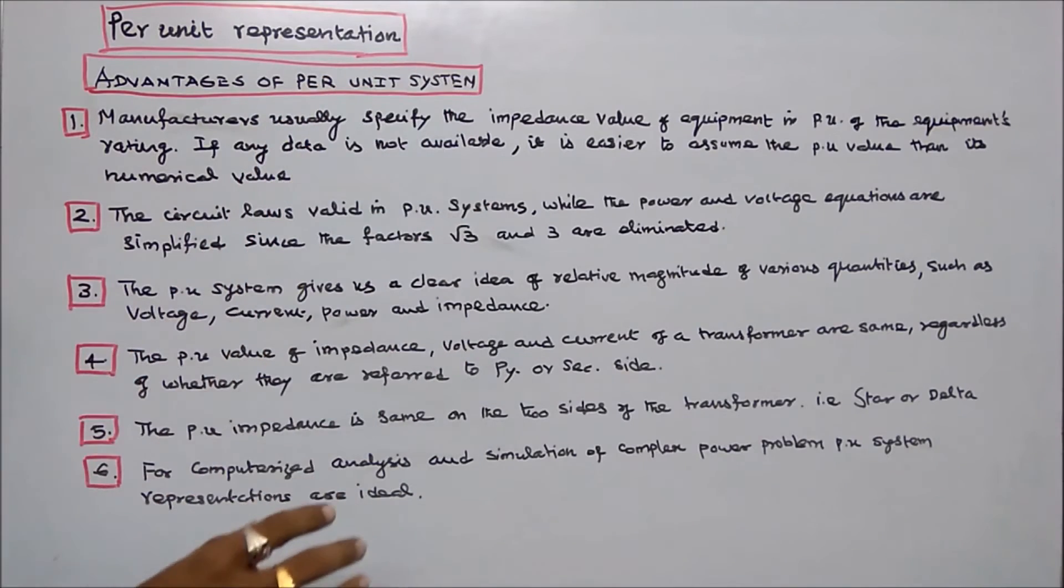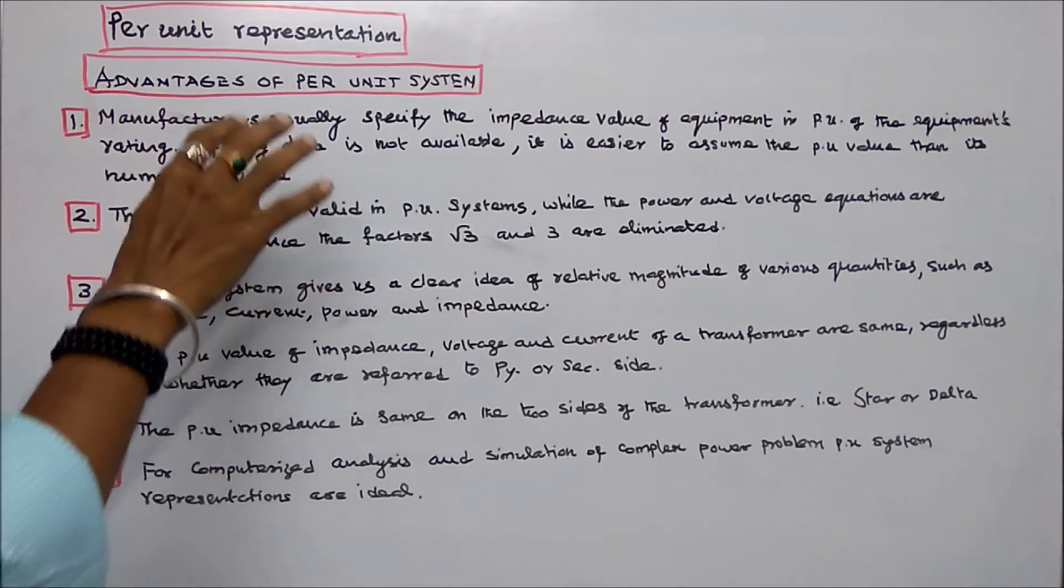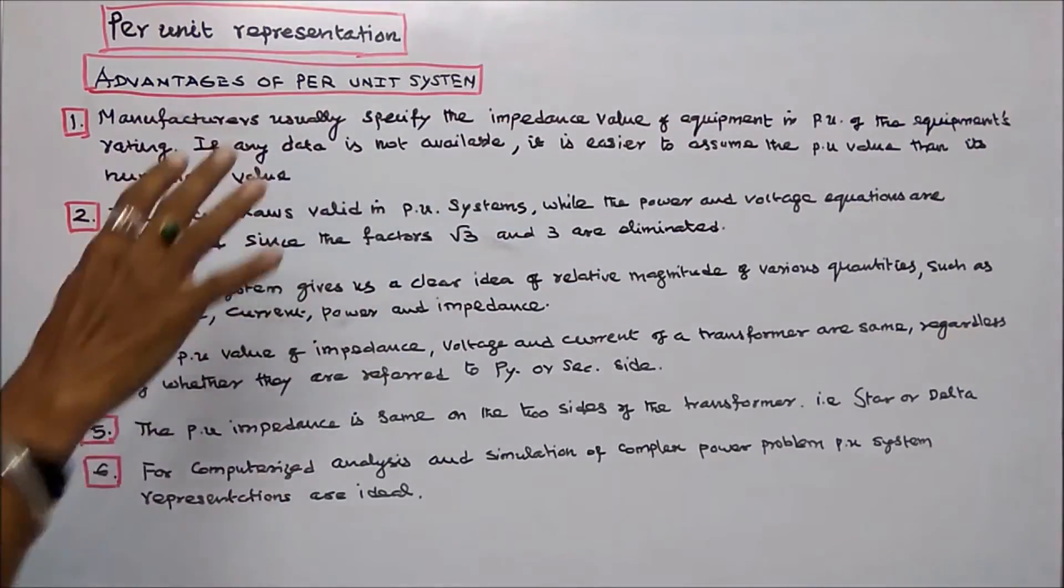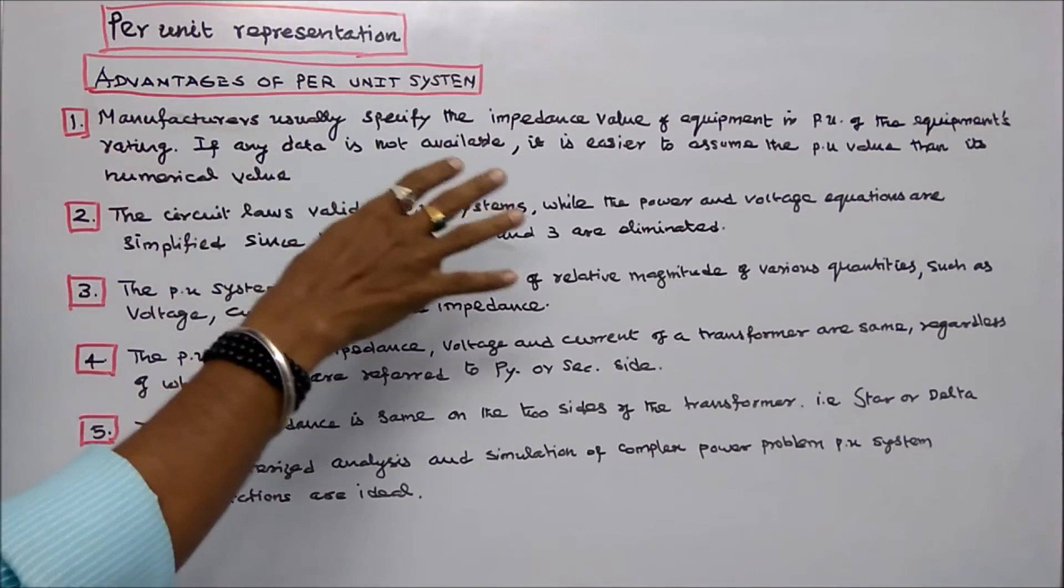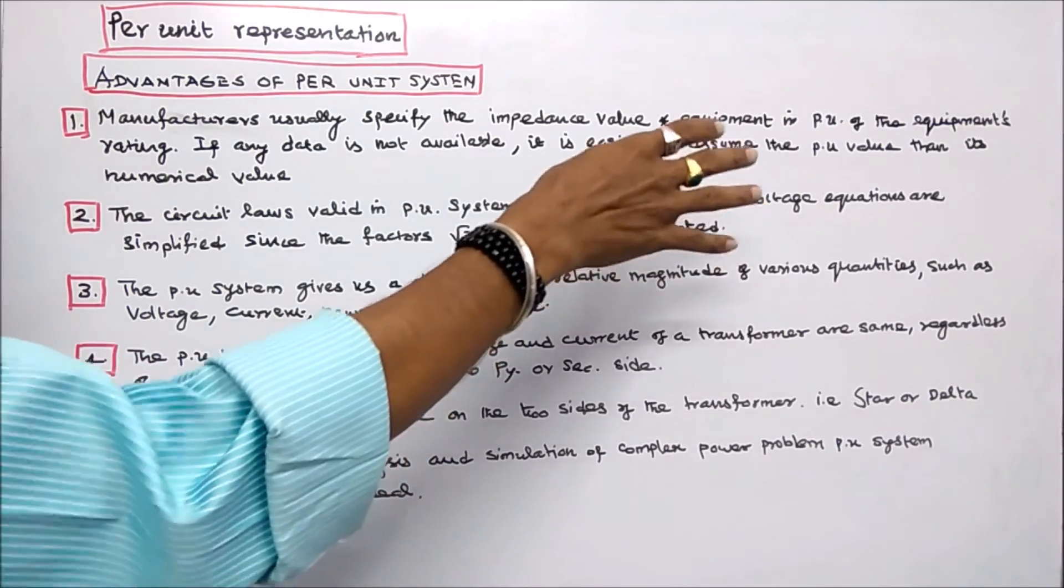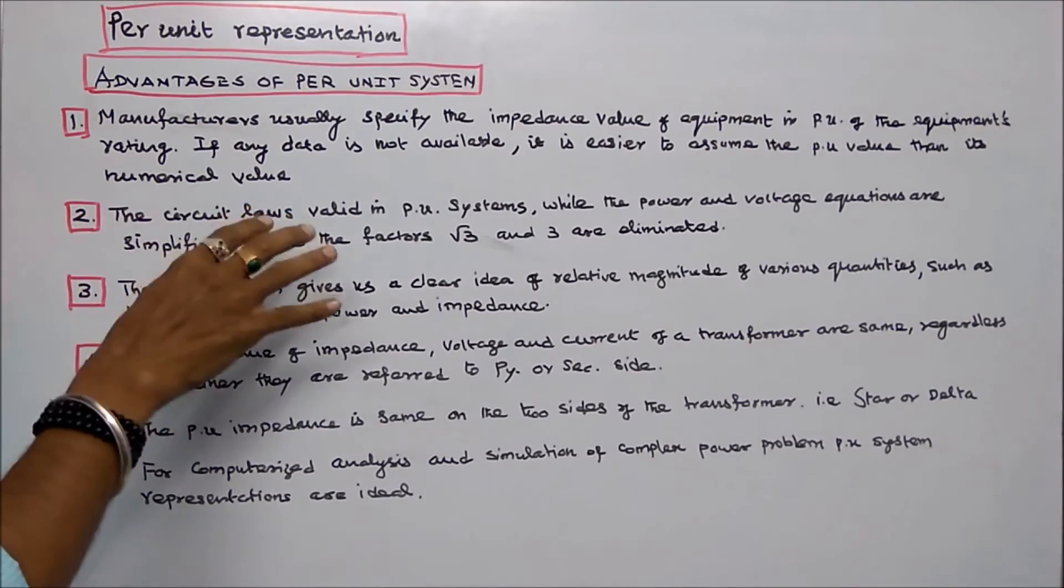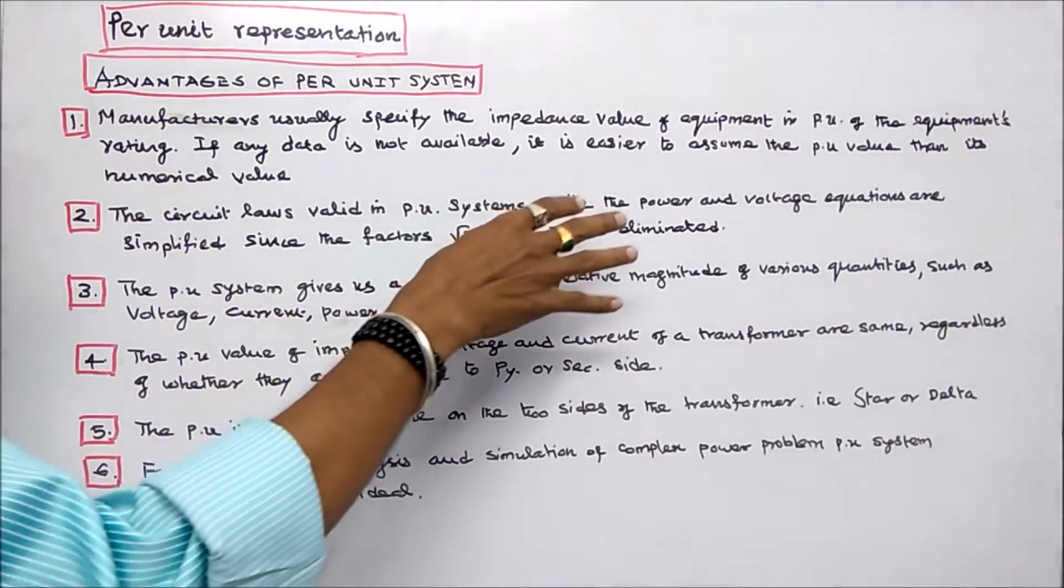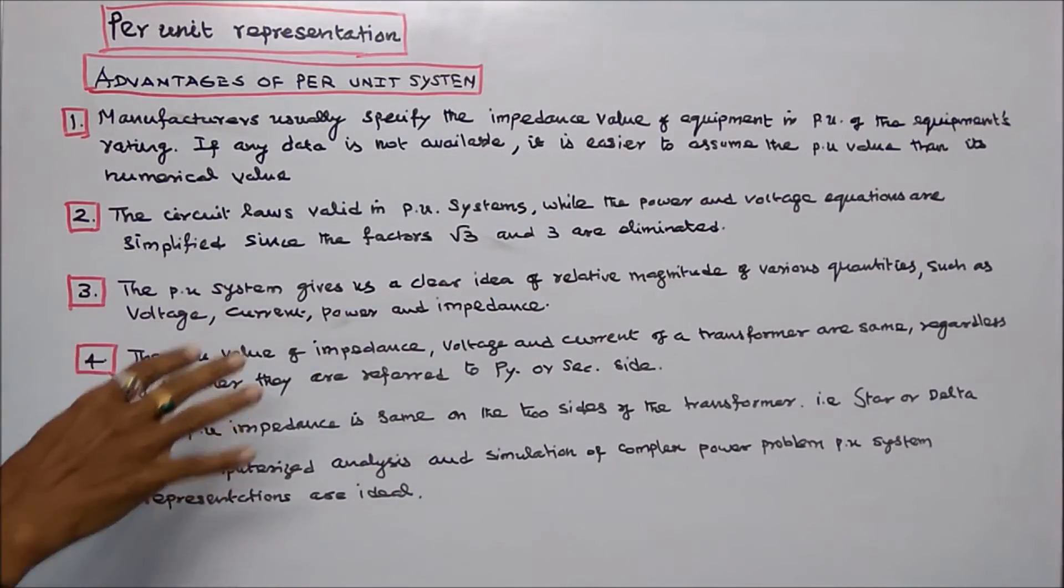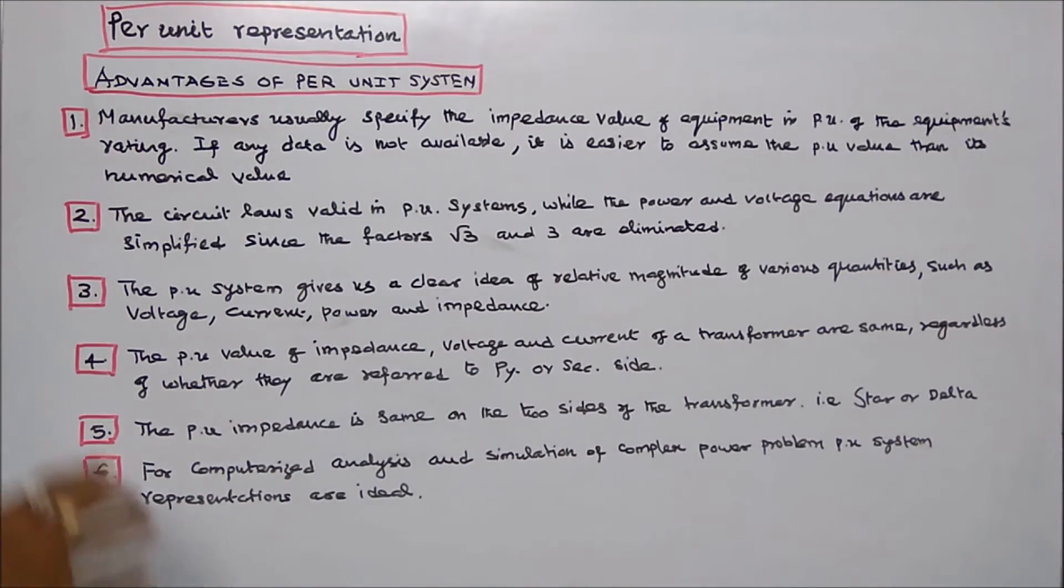Advantages of per unit system. Number 1: Manufacturers usually specify the impedance value of equipment in per unit of the equipment's rating. If any data is not available, it is easier to assume the per unit value than its numerical value. Number 2: The circuit loss varies in per unit systems while the power and voltage equations are simplified, since the factors root 3 and 3 are eliminated.